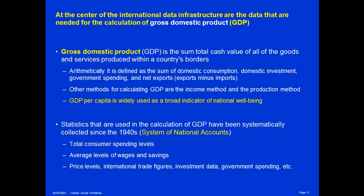At the center of the international data infrastructure are the data needed for the calculation of gross domestic product, or GDP. Gross domestic product is the sum total cash value of all the goods and services produced within a country's borders. There are three major methods for calculating GDP: the income method, the production method, and the consumption method. In the consumption method, GDP is defined arithmetically as the sum of domestic consumption, domestic investment, government spending, and net exports—or exports minus imports. What these four components really sum up to is everything being produced inside a country minus the things that have been imported that aren't really being produced by the people of the country themselves.